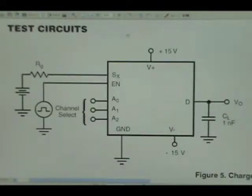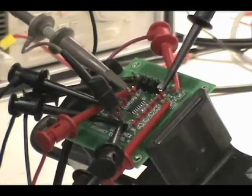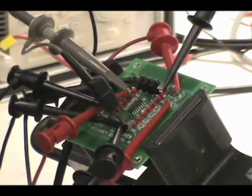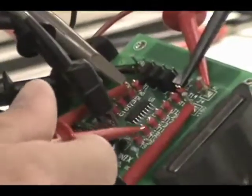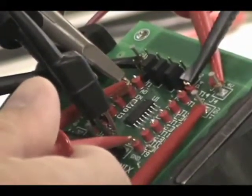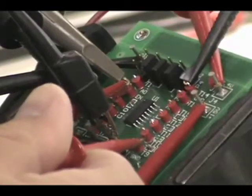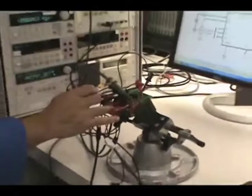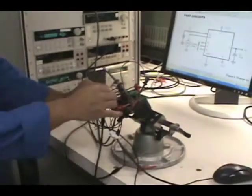This is the common circuit for industry standard charge injection test. Let's take channel 8 as an example and measure the charge injection. On the evaluation board, the channel identification is selected through the pin connectors. A 1 nanofarad capacitor is connected to ground. A bias voltage is connected to channel 8.